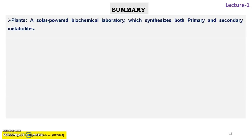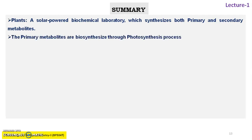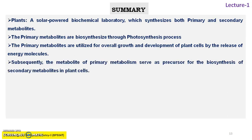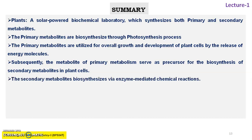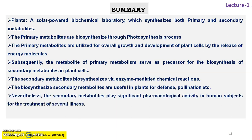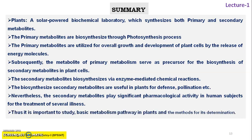Summary of this first lecture: plants are solar-powered biochemical laboratories that synthesize both primary and secondary metabolites. Primary metabolites are biosynthesized through photosynthesis and utilized for overall growth and development by releasing energy molecules. Subsequently, primary metabolites serve as precursors for biosynthesis of secondary metabolites via enzyme-mediated chemical reactions. Biosynthesized secondary metabolites are useful in plants for defense, pollination, etc., whereas secondary metabolites play significant pharmacological activity in humans for the treatment of several illnesses. Thus, it is important to study basic metabolic pathways in plants and methods for their determination.